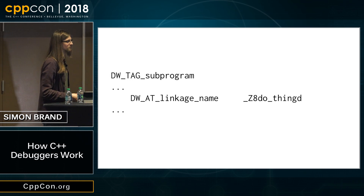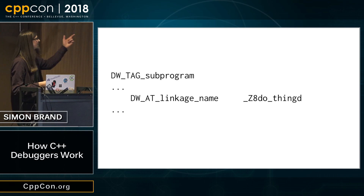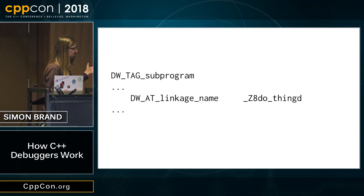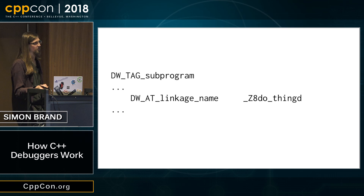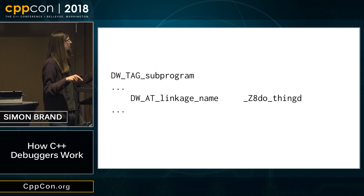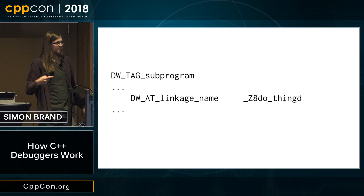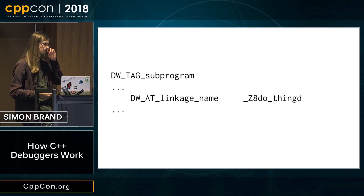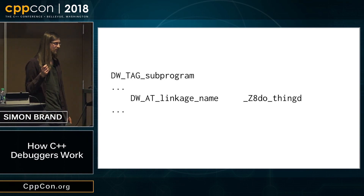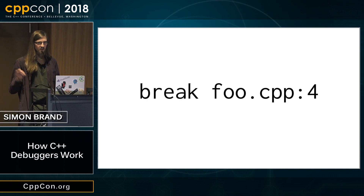Mangling can vary from compiler to compiler. This approach only works if you know you're working with the Itanium ABI. If you compiled with MSVC mangling and your debugger mangled using Itanium ABI, they would miss. On Linux, the Itanium ABI for mangling is the de facto standard. What about line breakpoints? If I want to set a breakpoint on `foo.cpp` line four, we look at the line table information, find line four, look at the NS (new statement) entry, and set a breakpoint at that address.